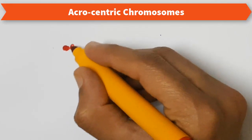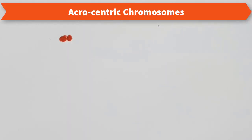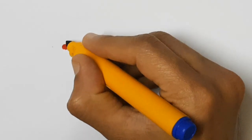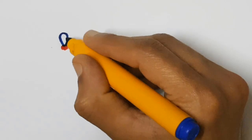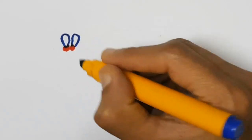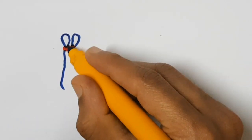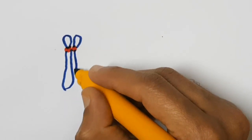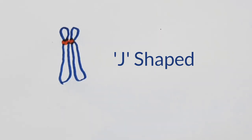Acrocentric chromosomes. In acrocentric chromosomes, the centromere is subterminal, meaning the centromere is positioned in such a way that one arm is short and another arm is long. Acrocentric chromosomes appear J-shaped.